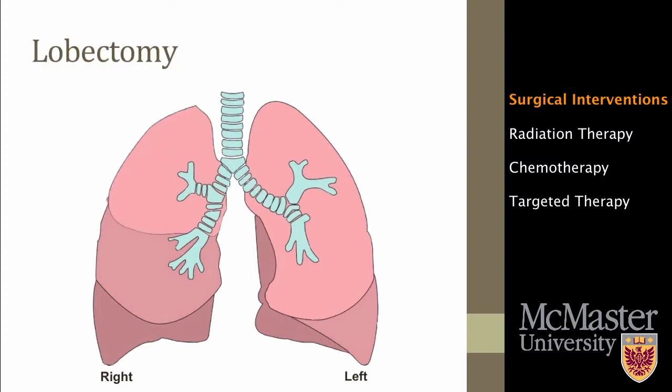The second is a lobectomy. The right lung has three lobes, whereas the left lung has two lobes. In a lobectomy, a whole lobe of the lung is removed. If your lungs are healthy, your doctor may recommend a lobectomy over a wedge resection as a way to increase the chances of completely removing the cancer.